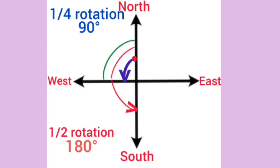Then, if we move north to east as anticlockwise, 3-4th rotation is covered, means 270 degree.